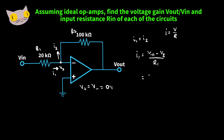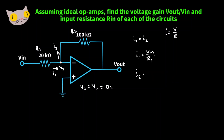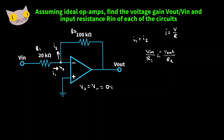We can also write I1 as V_in minus V at the negative terminal over R1. Since V negative is zero, I1 is just V_in over R1. For I2 we can write V2 minus Vout over R2; since V2 is zero, that becomes negative Vout over R2. So we have V_in over R1 equals negative Vout over R2, which rearranges to Vout over V_in equals negative R2 over R1.